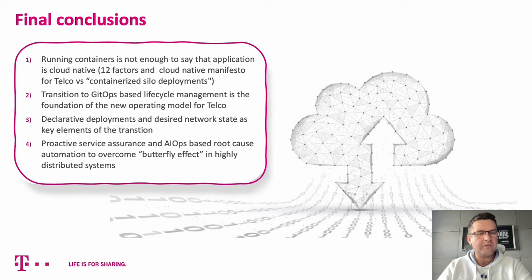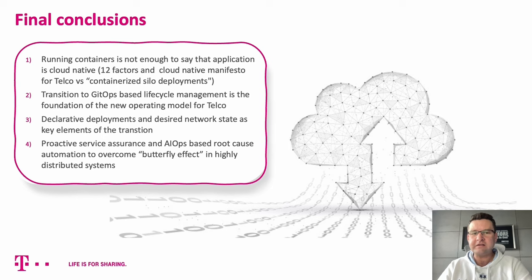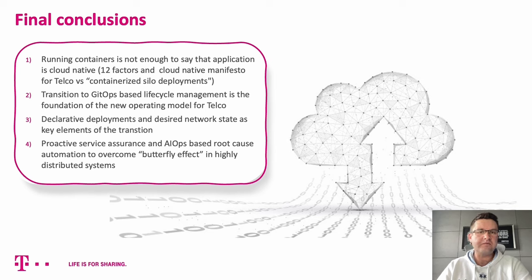Last but not least, I mentioned the so-called butterfly effect, very much related with highly distributed systems. To avoid it, there are two recommended approaches. First, we should use proactive service assurance — so-called non-stop testing even in production. Even if we tested things in the lab, we should consider the system to be tested non-stop. Second, we should not rely on manual troubleshooting processes because the data is overwhelming and the scale is beyond human capacities. Definitely, use of AIOps and those kinds of solutions is very much recommended.